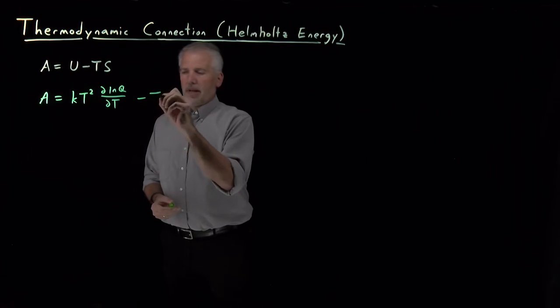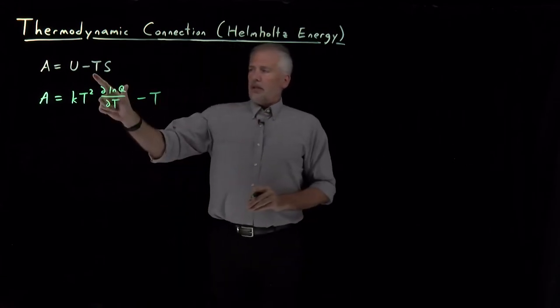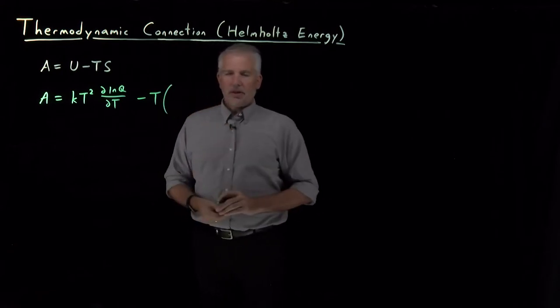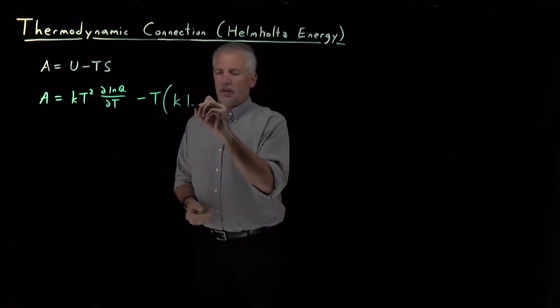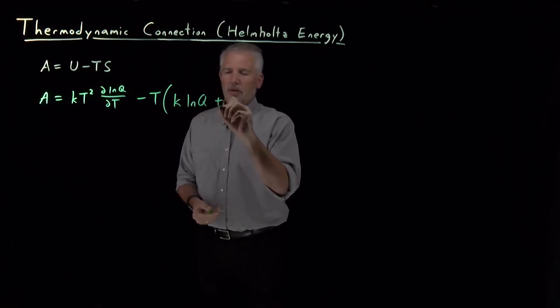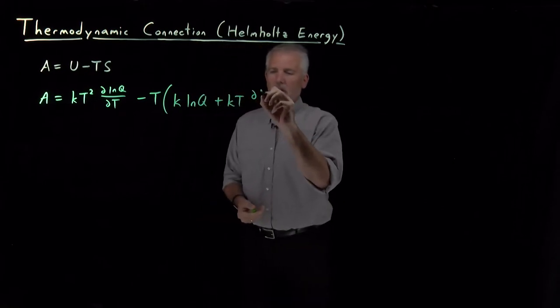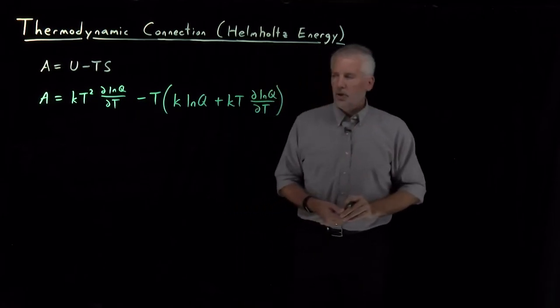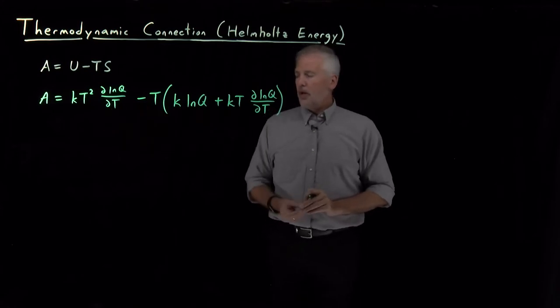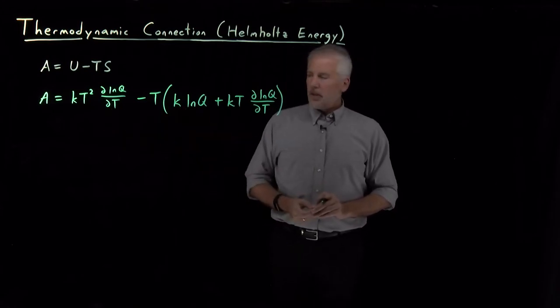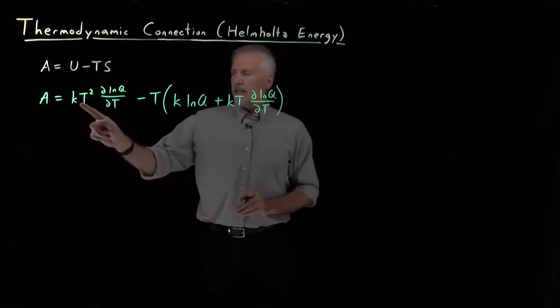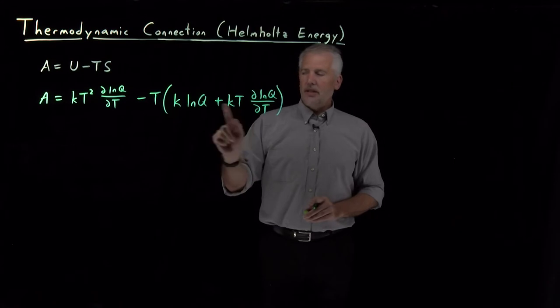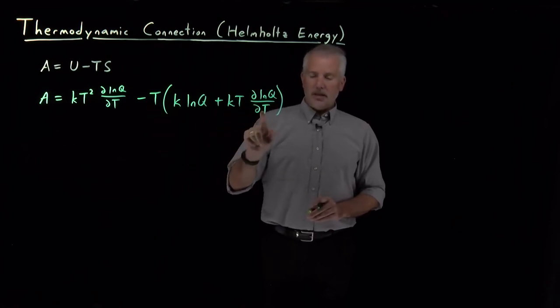I can subtract from that T times S, and we also have a thermodynamic connection formula for the entropy. That was k log Q plus kT d log Q dT. So those are both results we've had before, and combining these results simplifies quite a bit. This term kT squared d log Q dT is exactly the negative of this term.